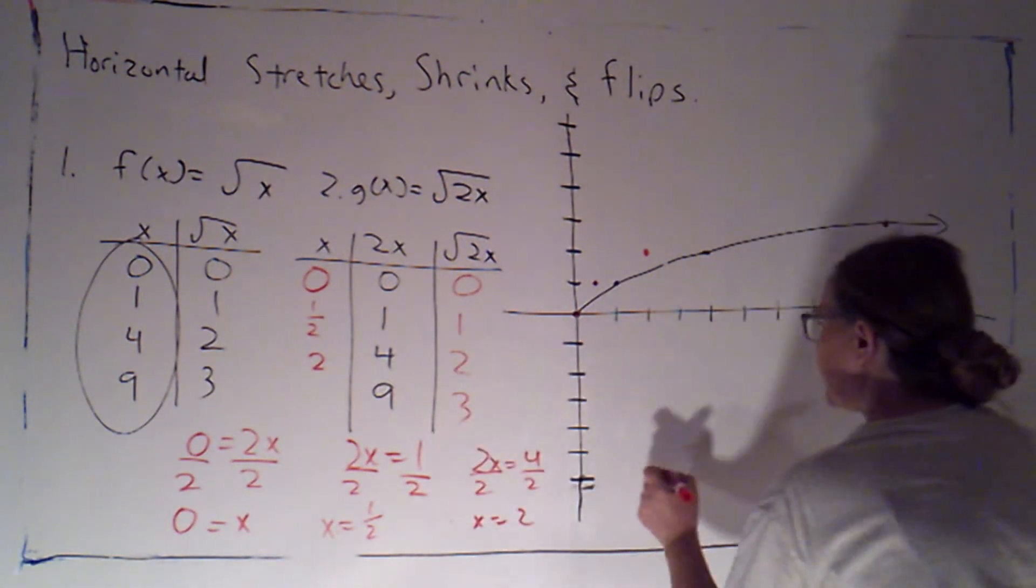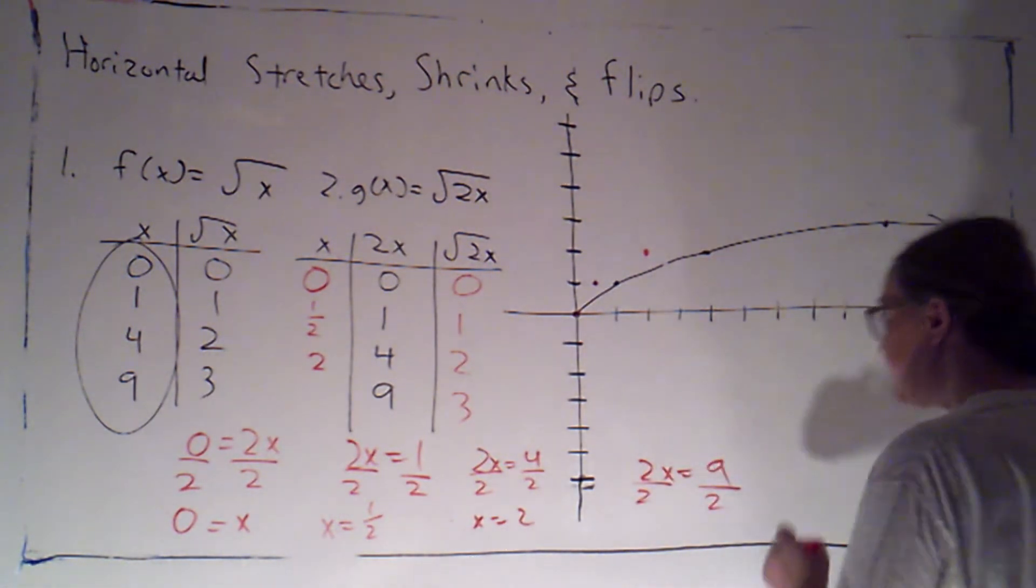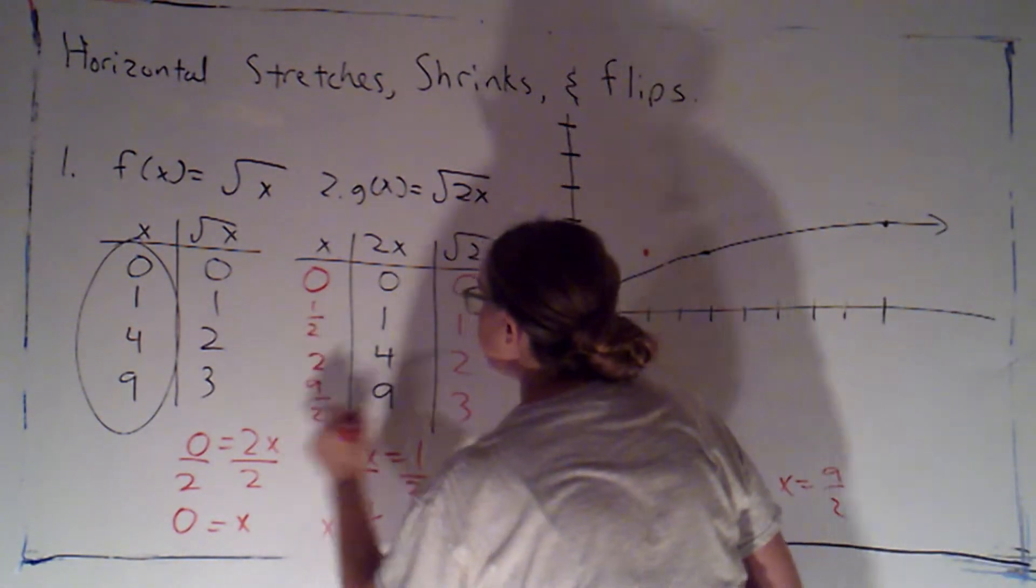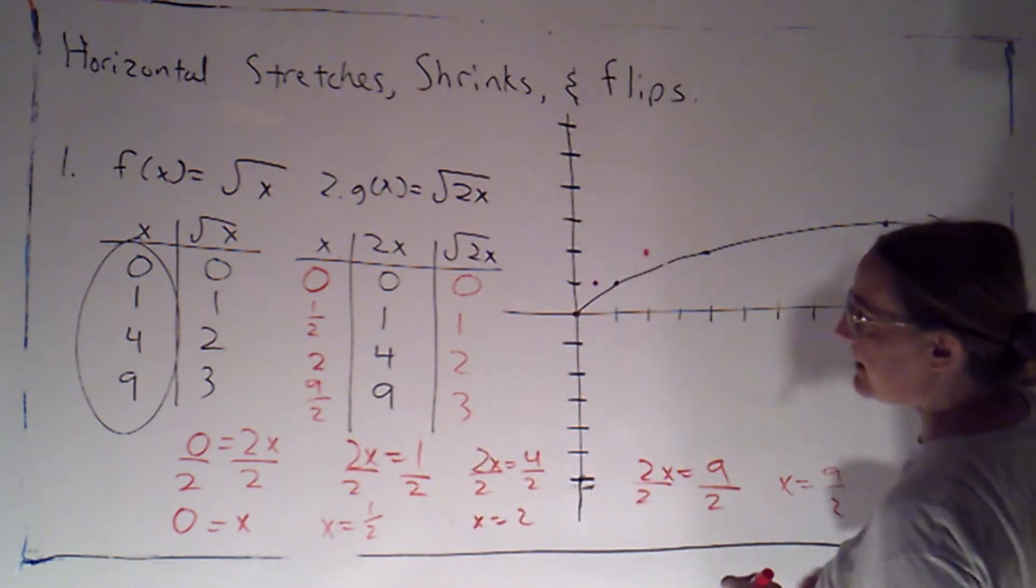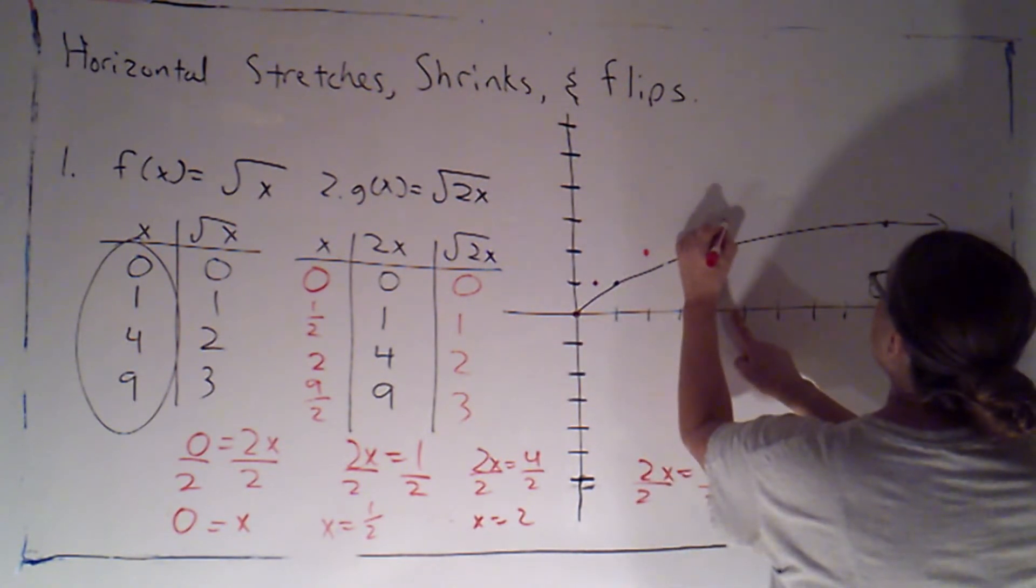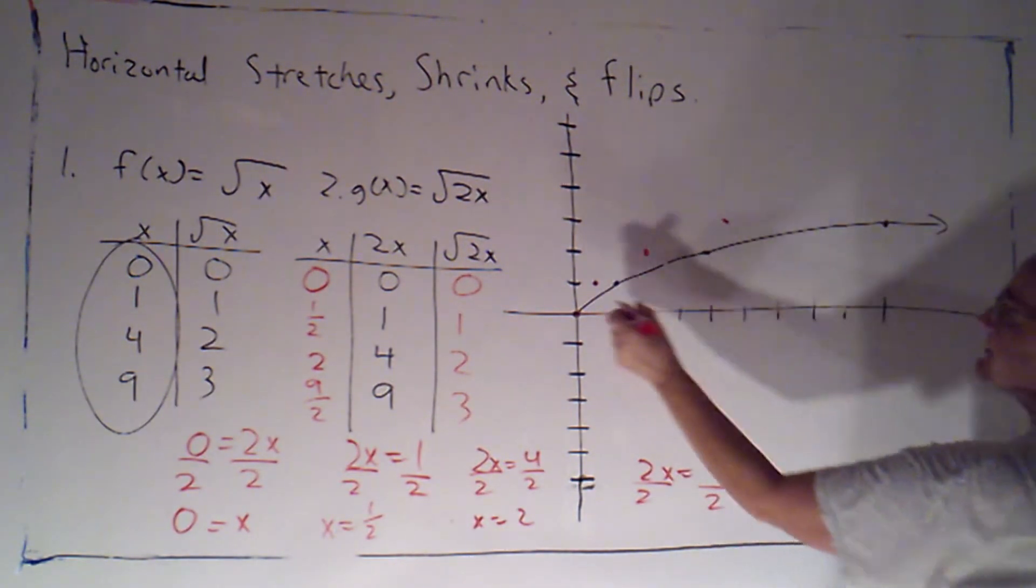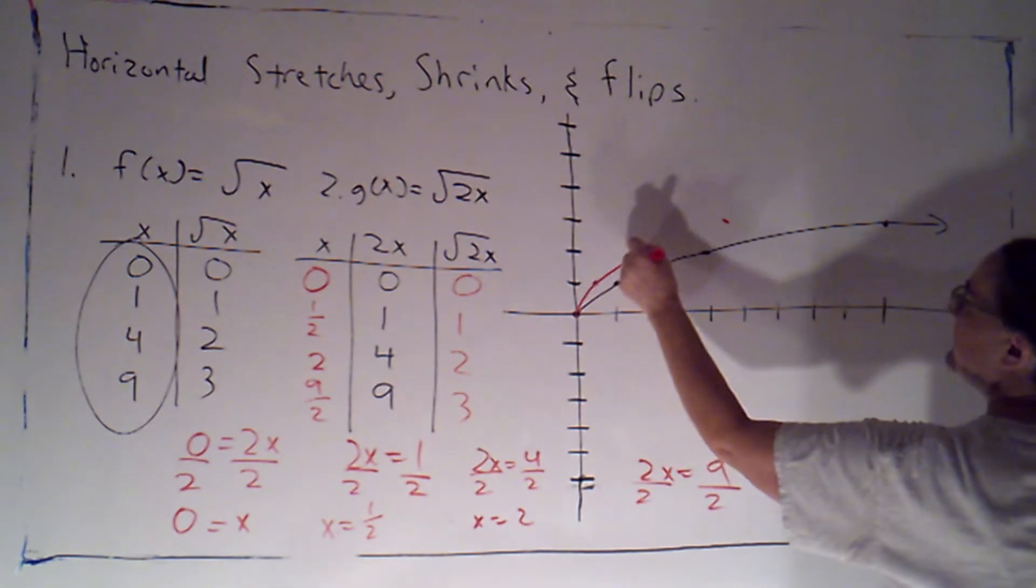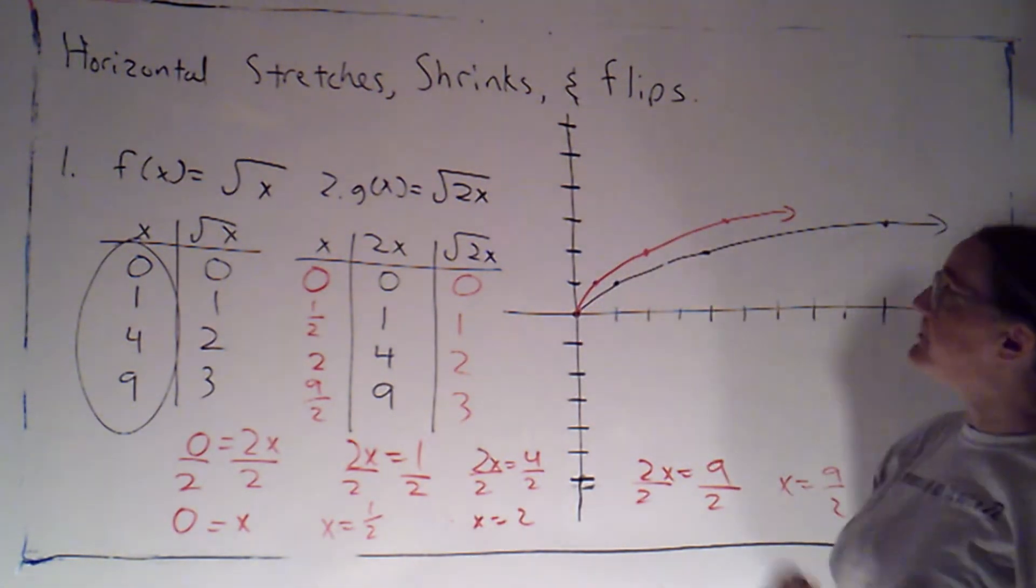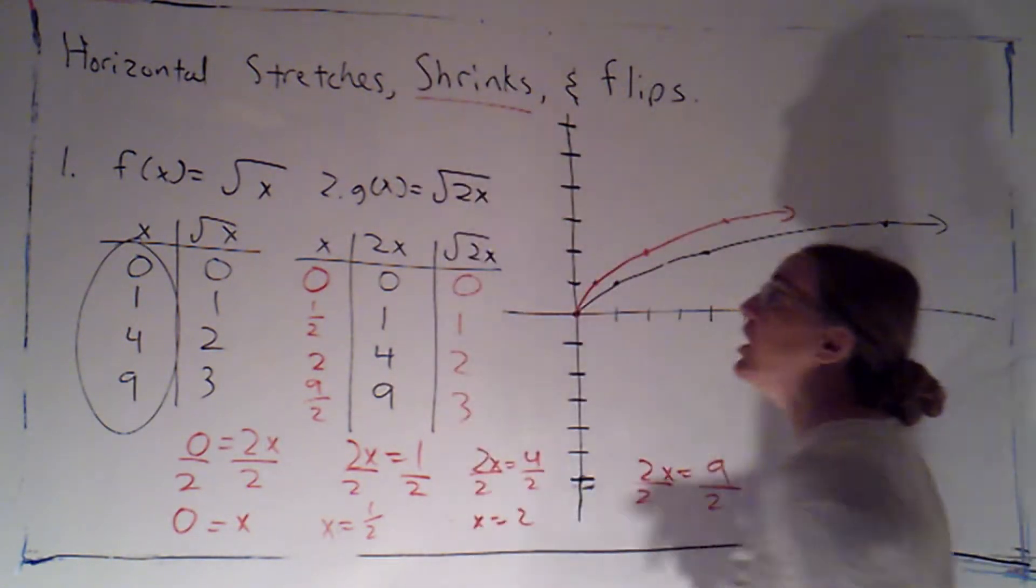So here, if 2x is equal to 9, again I would divide both sides by 2, so x would equal 9 half. So that's 4 and a half, so that's going to be right about here. So again, same y value as I had, but the x value is half as big. So this is going to be the graph of the square root of 2x, and that's going to accomplish a horizontal shrink.